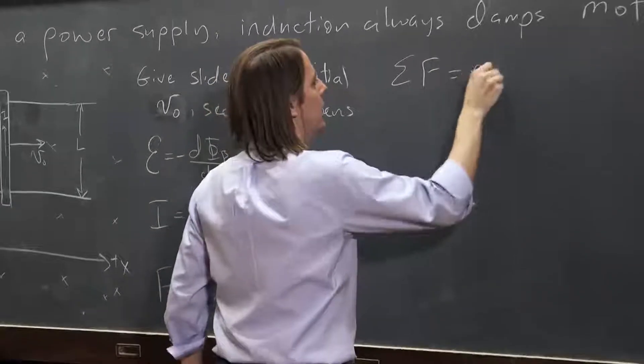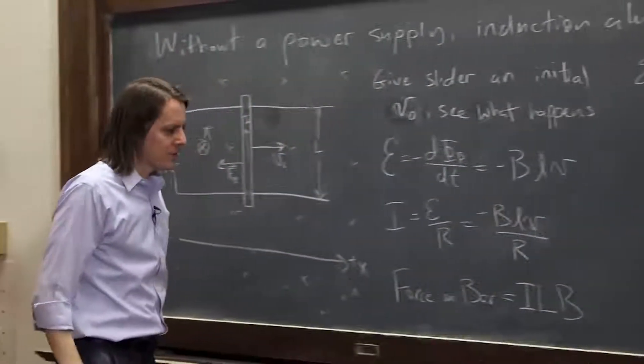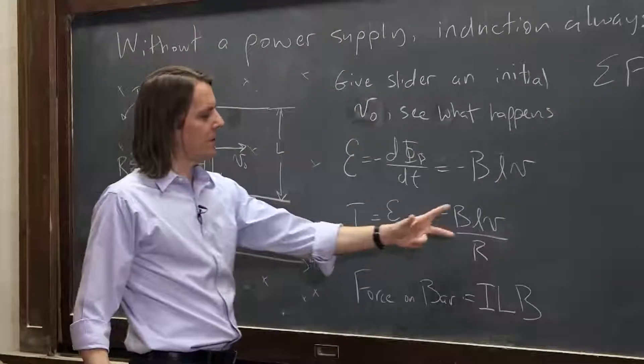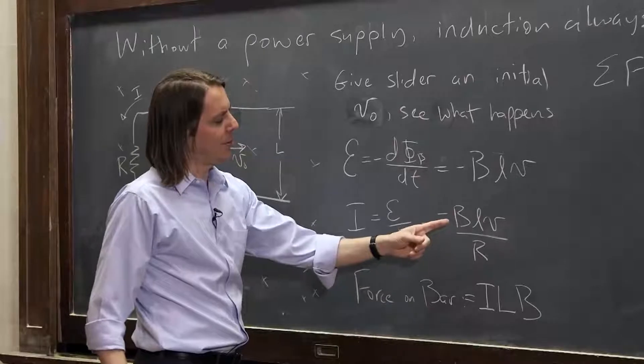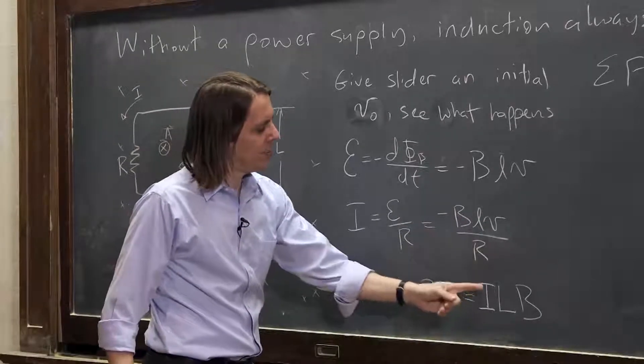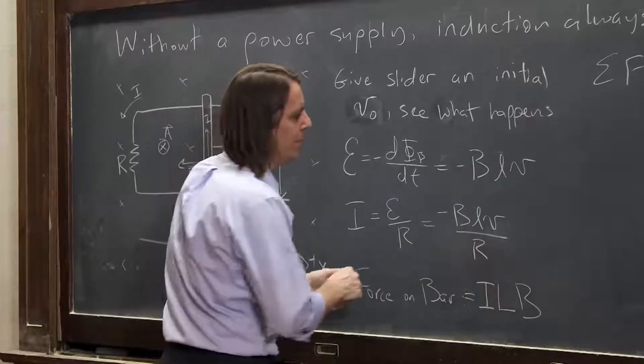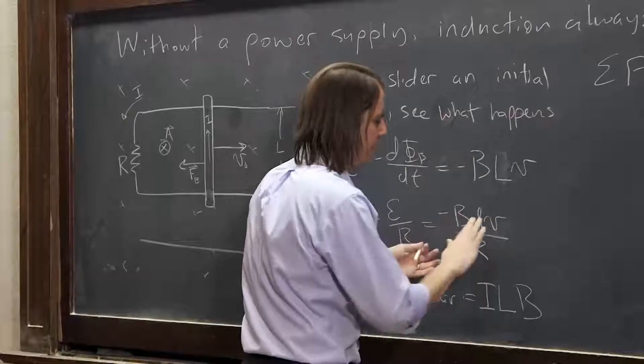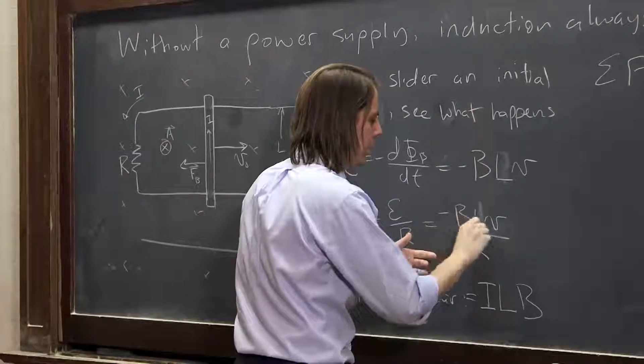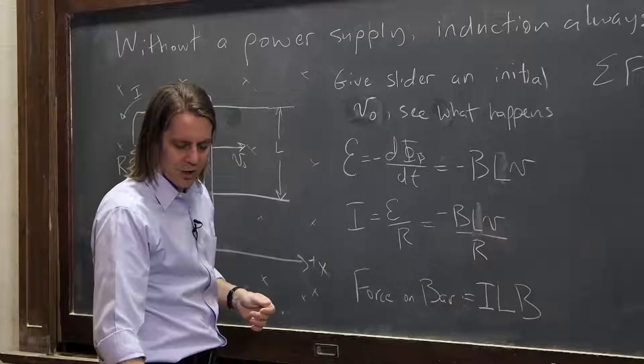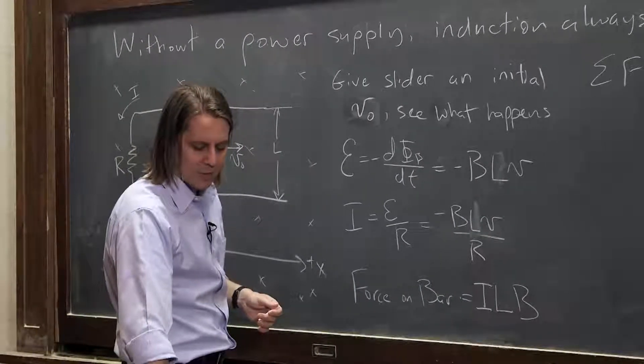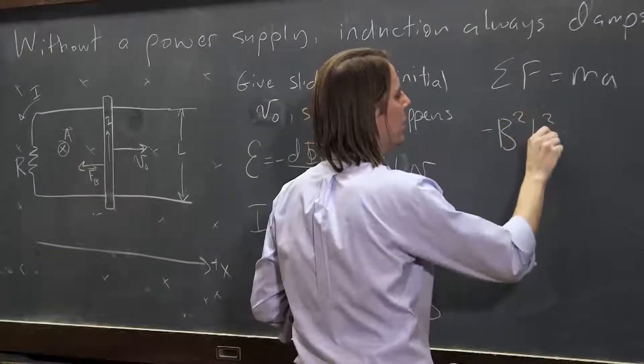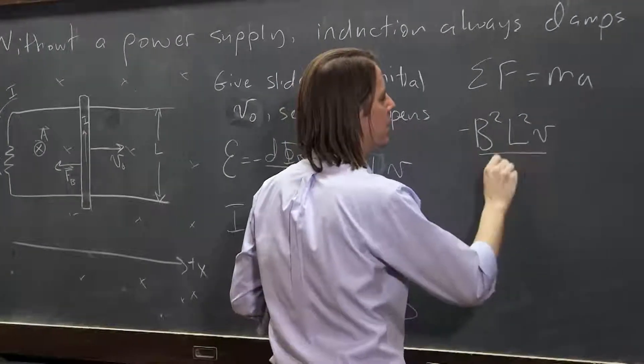So we have something with initial velocity this way and a force dragging it back that way that depends on its velocity. Oh, that's going to make a mess. Let's do kinematics. Sum of the forces equals ma. So the only force is this ILB force. Let's go ahead and plug in the current into ILB, and it becomes negative blv over R times LB. So the LBs are squared, and I've gone and used a little l. It's a big L because I was thinking of the last board. So the Bs and the Ls are squared, so it ends up that the force is minus b squared L squared V over R.